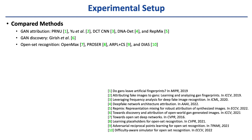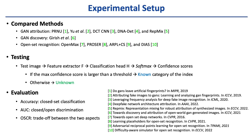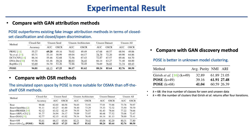We compare against three groups of baselines: GAN attribution, GAN discovery, and open set recognition methods. In testing, the image is fed into the feature extractor and classification head, getting predicted confidence scores for each class after a softmax function. If the max score is larger than the threshold, the image is recognized as the known category corresponding to the index of the score; otherwise, it is detected as unknown. We follow open set recognition works to evaluate by accuracy, AUC, and OSCR. Our method outperforms existing methods in terms of closed set classification and open set discrimination.